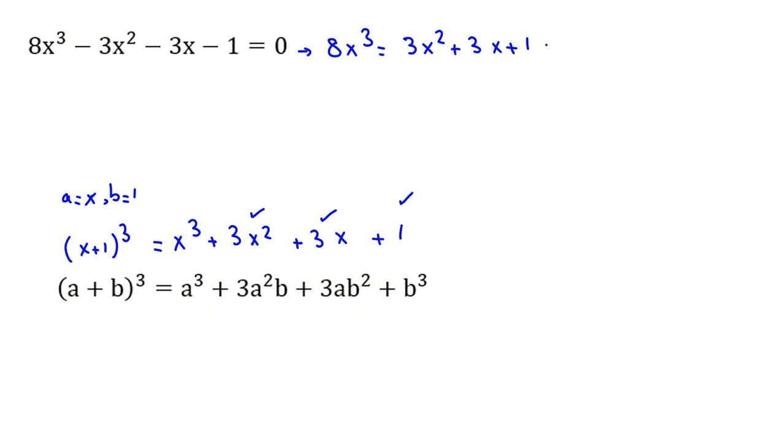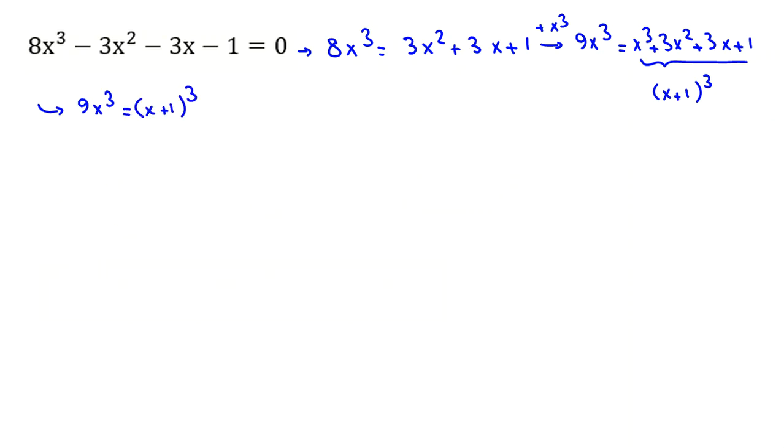But we don't have x³. So if we add x³ to both sides, the left-hand side will be 9x³, and the right-hand side will be x³ + 3x² + 3x + 1. This is exactly the identity (x+1)³. So we can write 9x³ = (x+1)³.